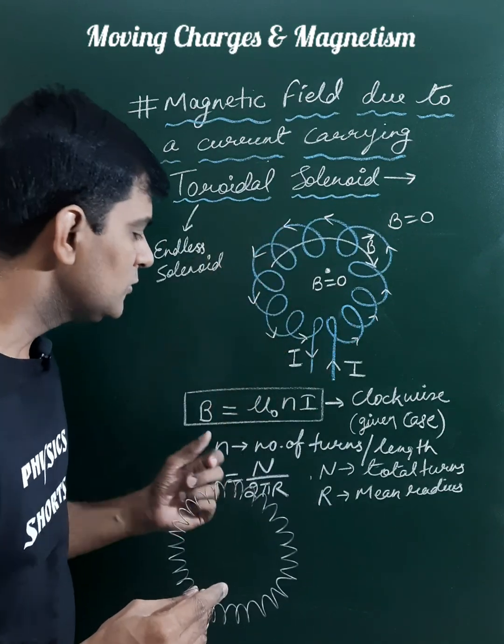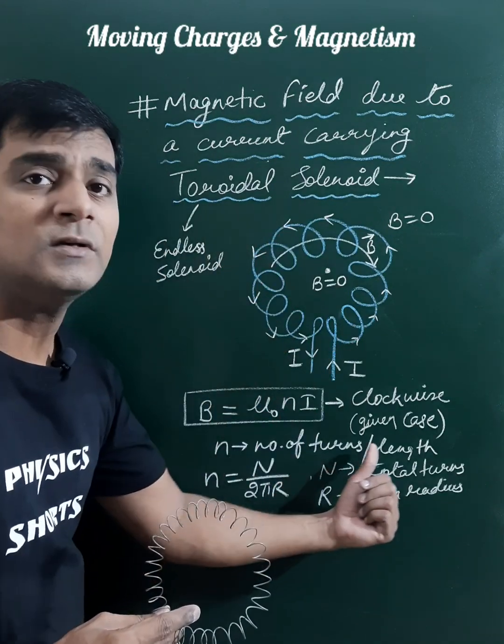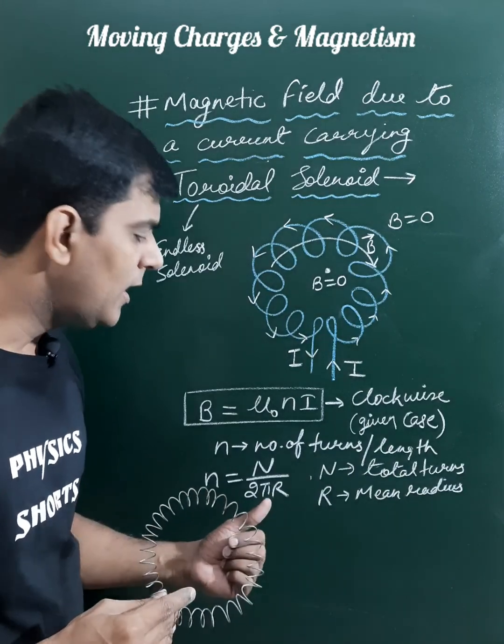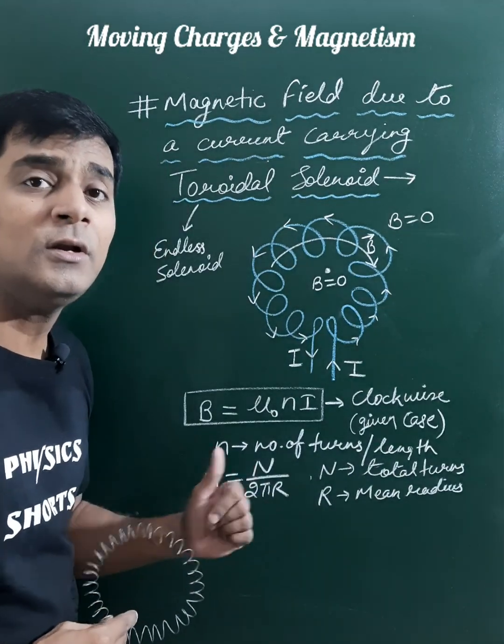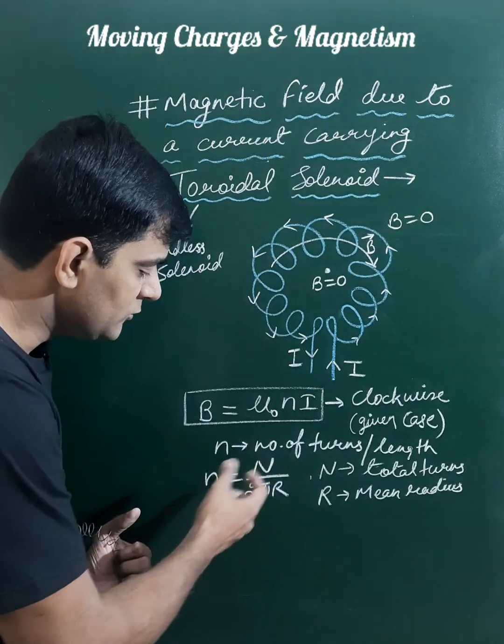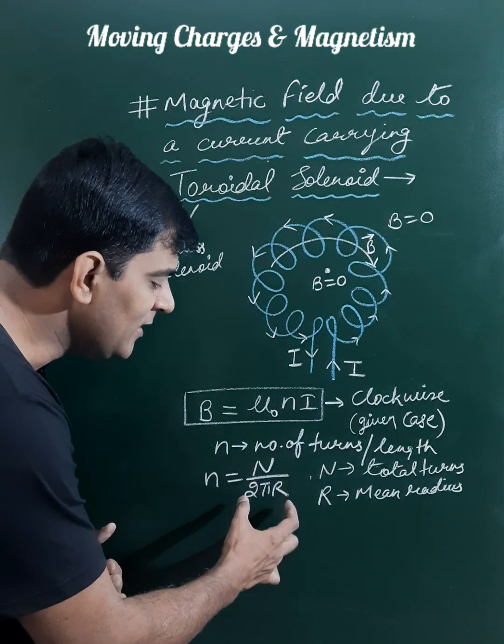This n used in this formula is number of turns per unit length. Suppose r is the average radius and total number of turns are capital N, so small n can be written as N upon 2 pi r.